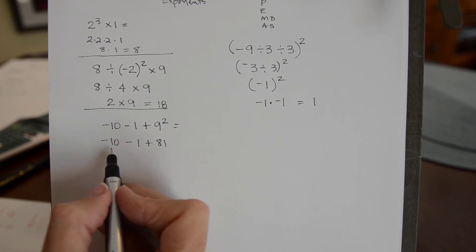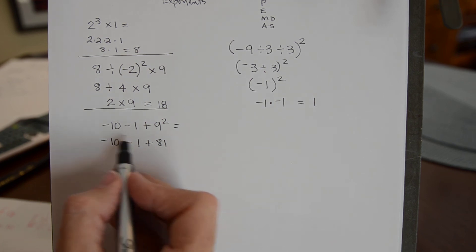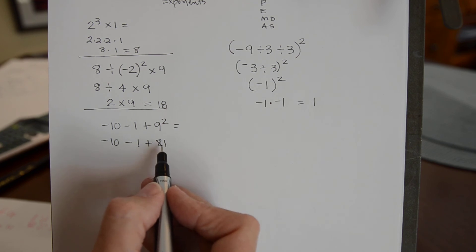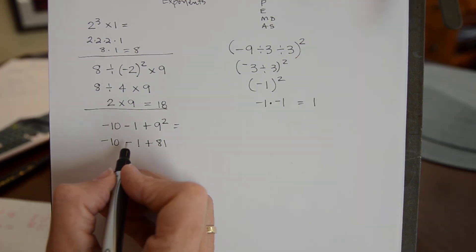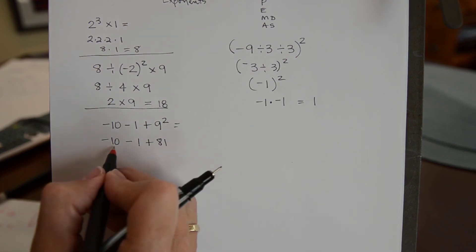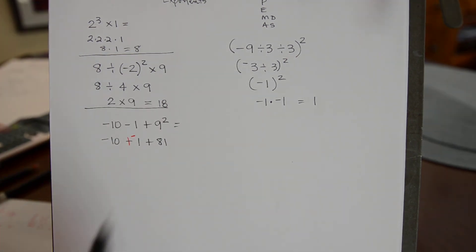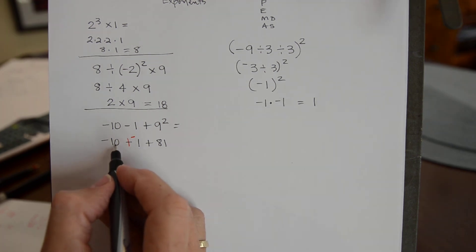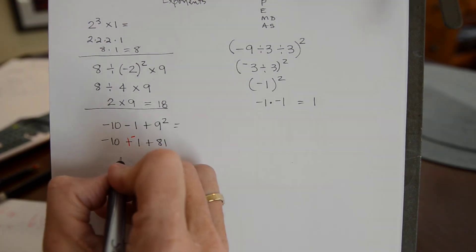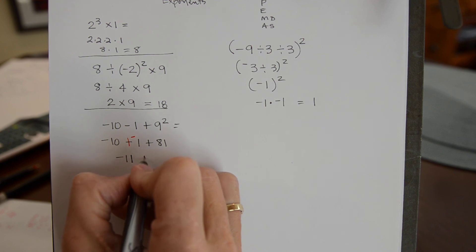Now I need to move over here and I need to deal with this subtraction before I get to this addition. So here is an example when I really want you to do the keep it, change it, change it. So now you can see that you're actually adding these two negative numbers together. So I have negative 11 plus 81, which is actually going to be a subtraction problem.